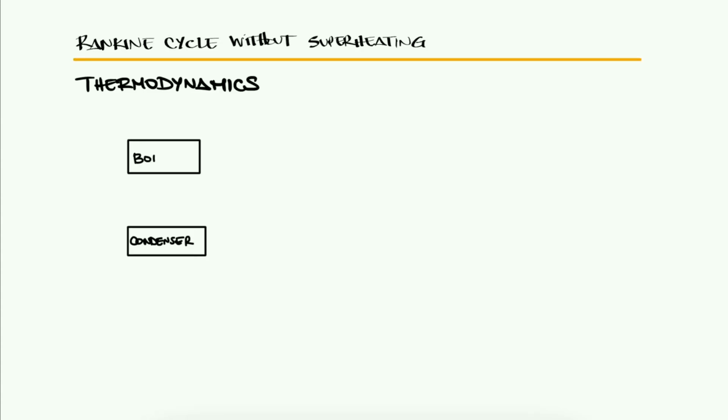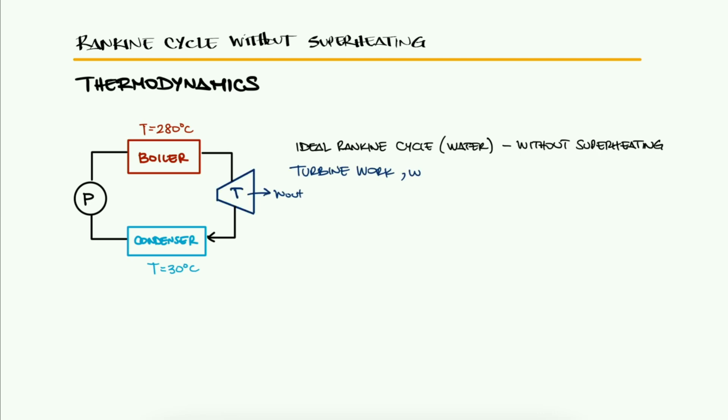A condenser and a boiler in a simple ideal Rankine cycle that uses water operate at 30 and 280 degrees Celsius respectively. If no superheating occurs in this cycle, how much work does the turbine produce?